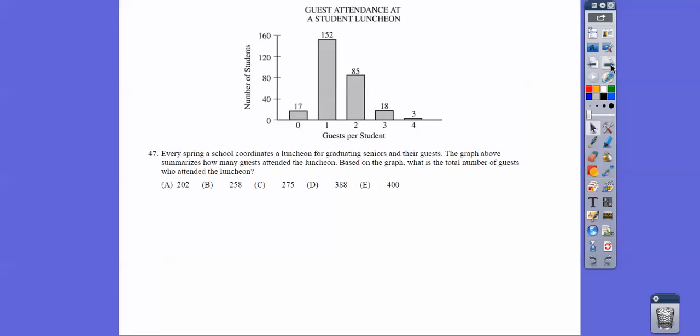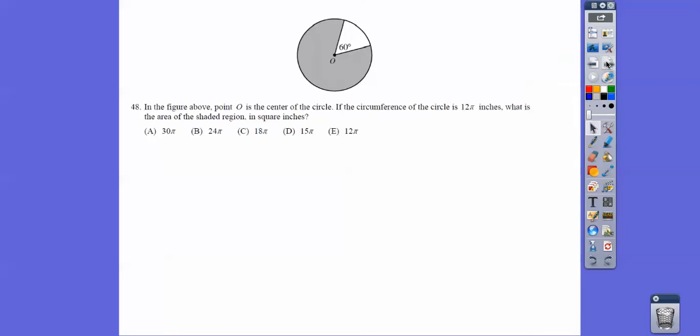Every spring, a school coordinates a luncheon for graduating seniors and their guests. The graph above summarizes how many guests attended the luncheon. Based on the graph, what is the total number of guests who attended? So here is the number of students. There's one guest for 152 students, there's two guests for 85, three guests for 18, and four guests for 3. So we multiply all those up, add them up, and that tells us 388.